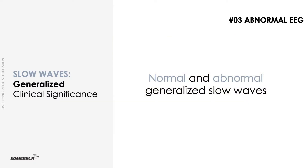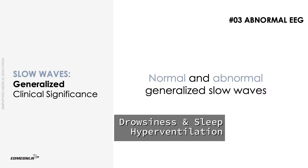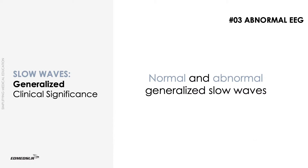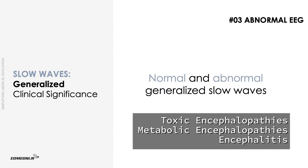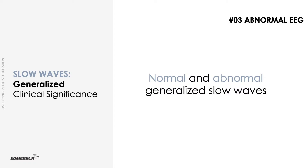Normal generalized slow waves are commonly seen either during drowsiness and sleep at any age, or in response to hyperventilation at any age, especially in childhood. Abnormal generalized slow waves are frequently encountered in toxic and metabolic encephalopathies. They may also be seen in conditions like encephalitis.